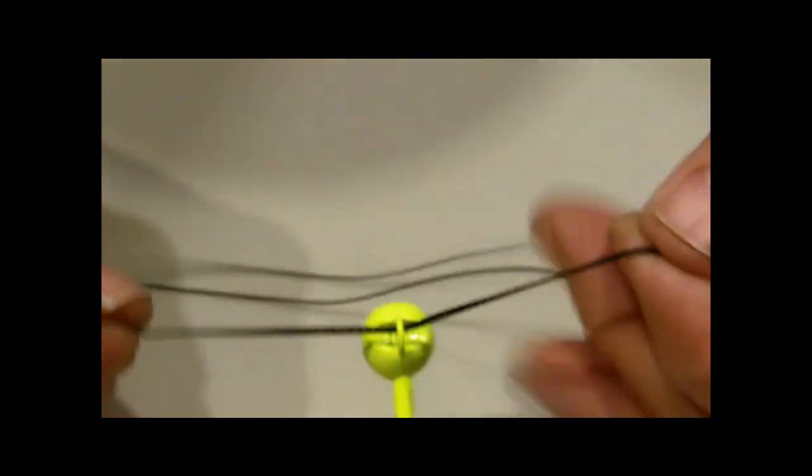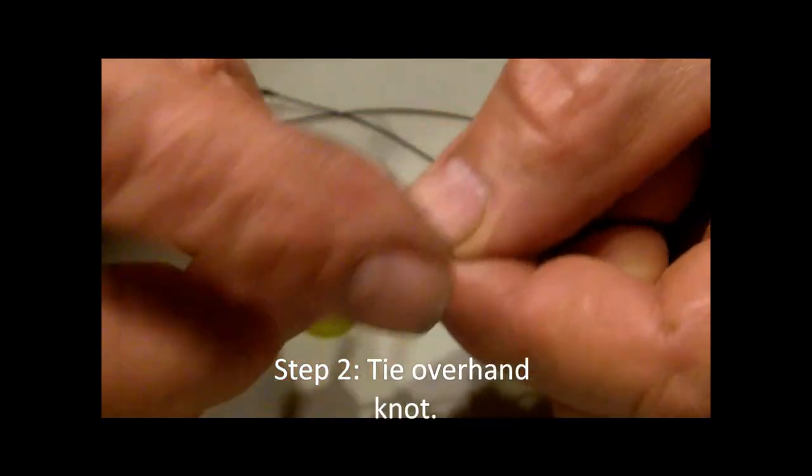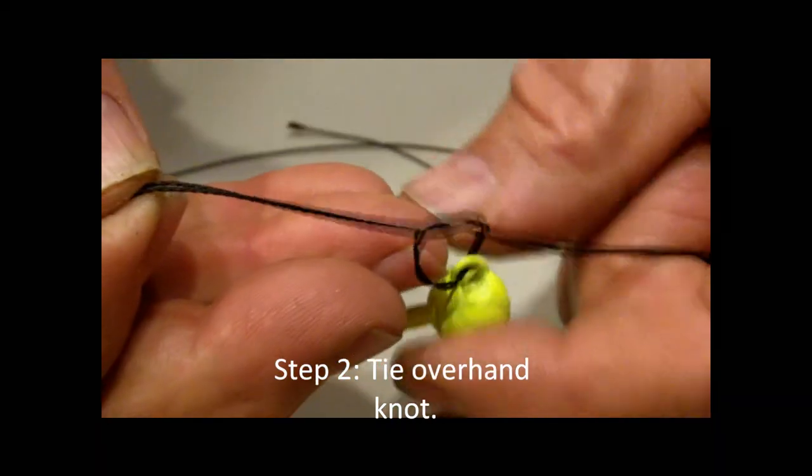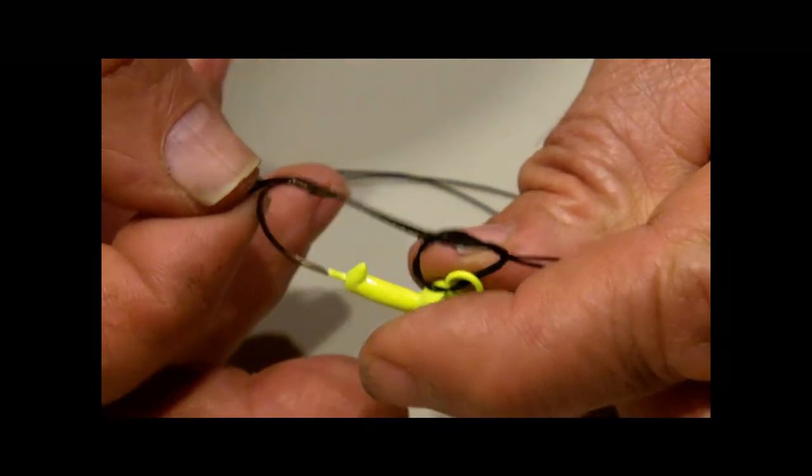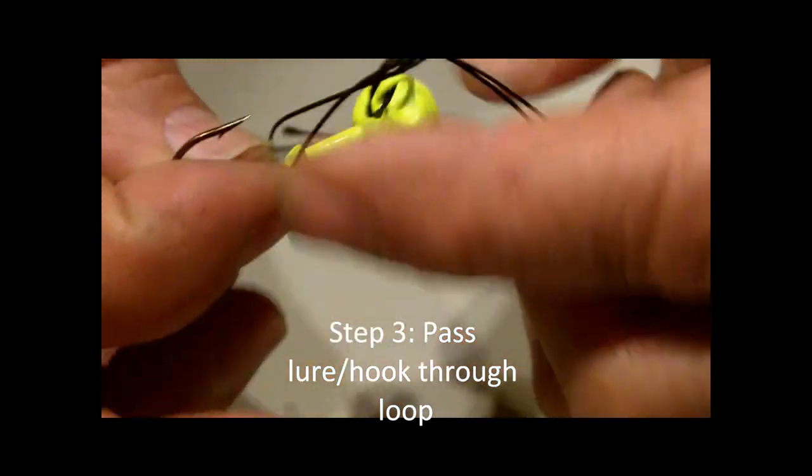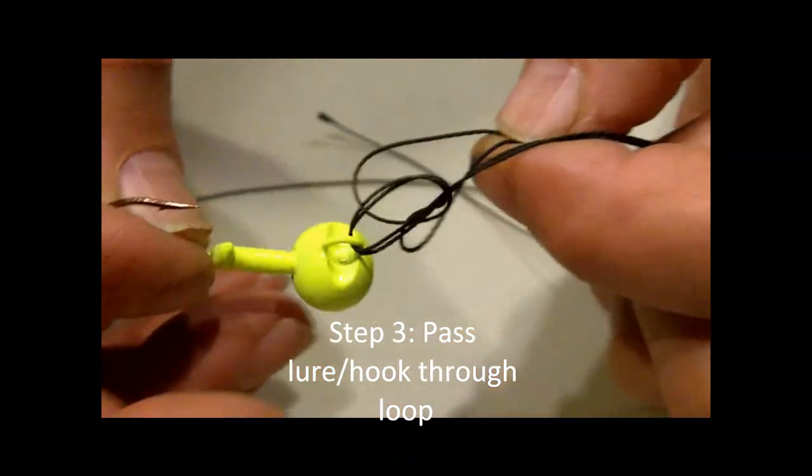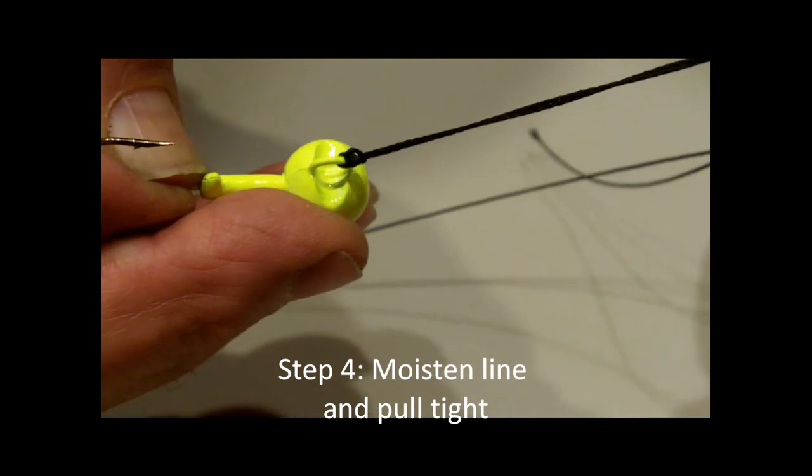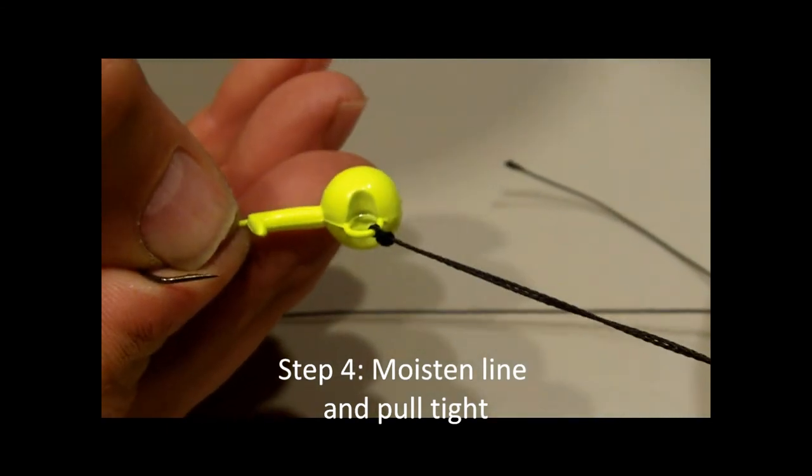Then take it, tie a simple overhand knot like so. You can pass the jig through the loop and pull the whole works tight. And there you have it, a Palomar knot.